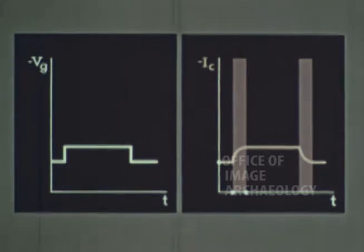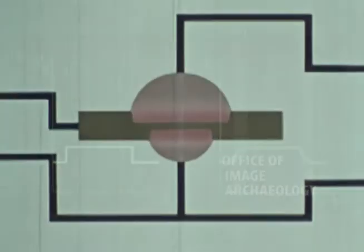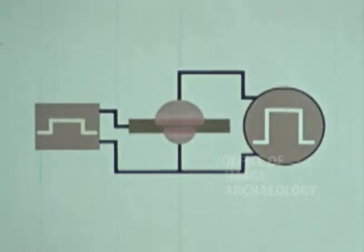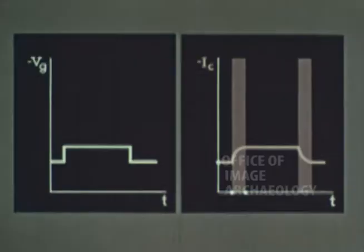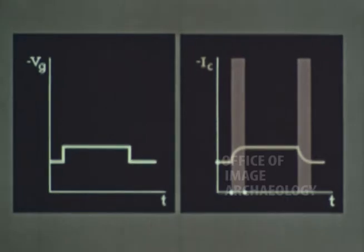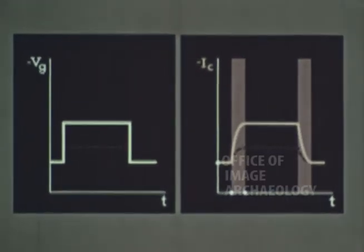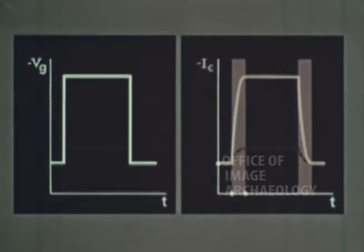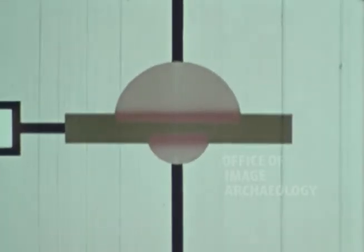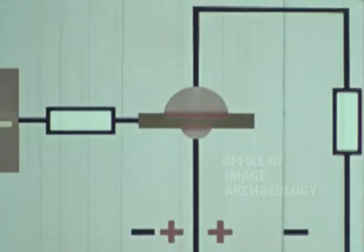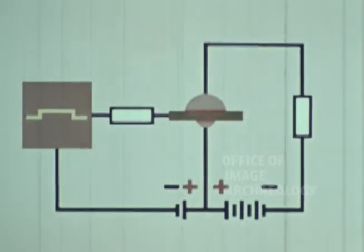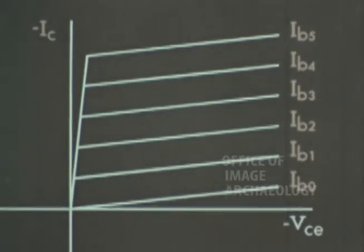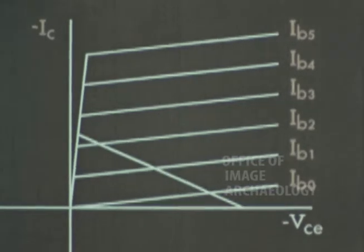Up to now we have considered the time taken for small current variations to occur, which means the transistor is acting as a pulse amplifier. When a higher input voltage is applied, the output current also becomes higher, but the rise and fall times remain the same. Let us now examine the possibilities of using a transistor as a switching element with input and output resistors, and first refer to a series of typical output characteristics with load line and working point.